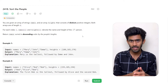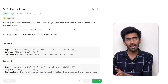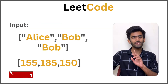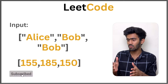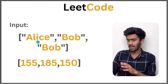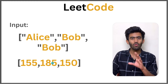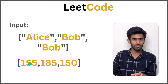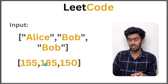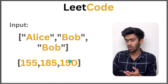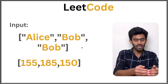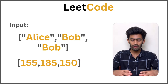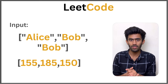For each index i, we have a respective names[i] and heights[i] denoting the height of that person. So from the given arrays, we know the height of Alice is 155, the height of Bob is 185, and the height of the second Bob is 150. Each name is associated with its corresponding height at the same index.